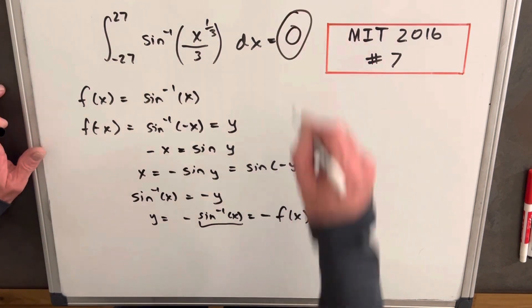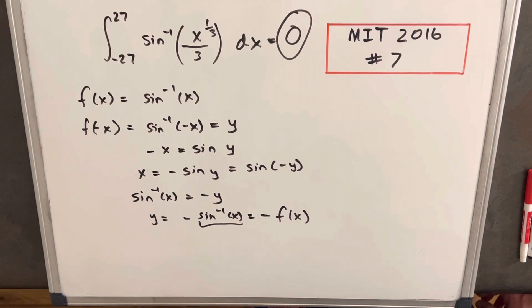And as we said earlier, the inner function's odd so the whole thing is odd and this is going to be zero. That's MIT 2016 problem number seven. Thanks for watching, please like and subscribe, have a good day.